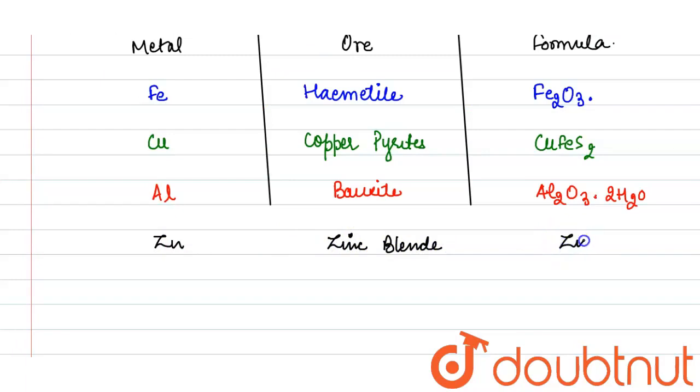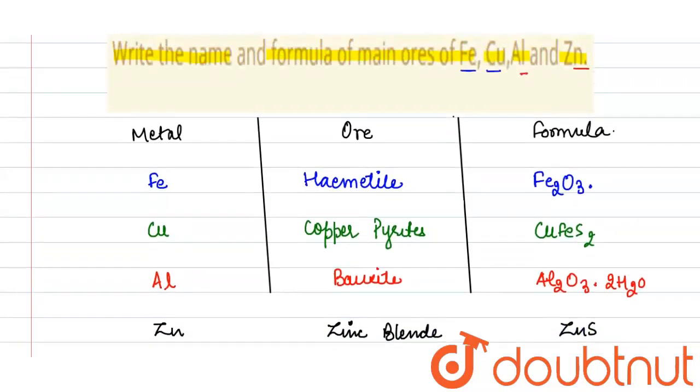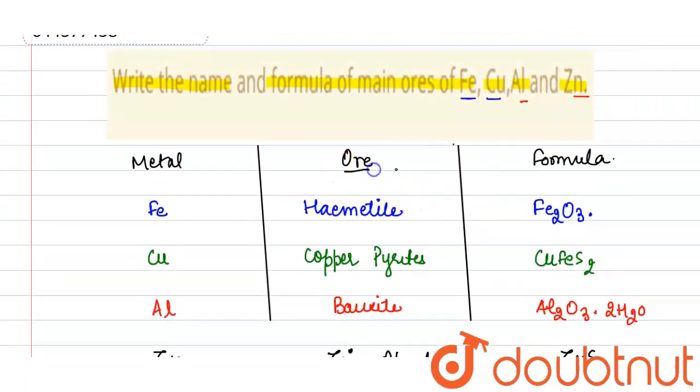Formula is ZnS. So these are the ores and formula of the main ore of these metals. Thank you.